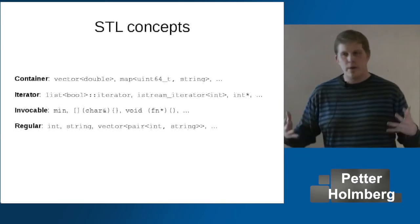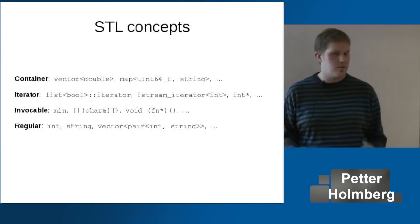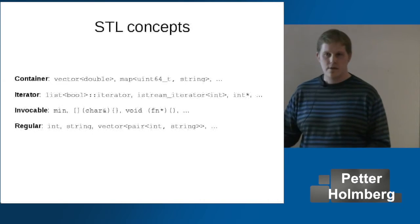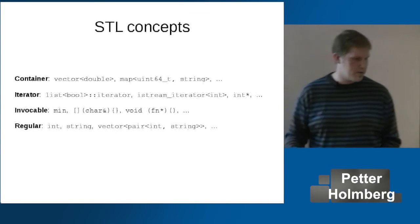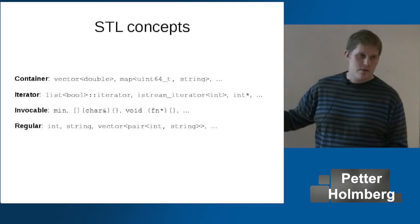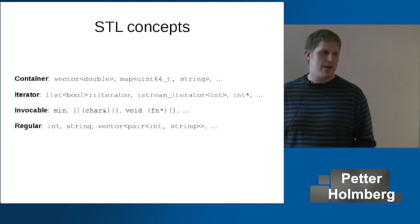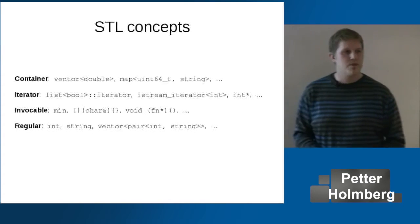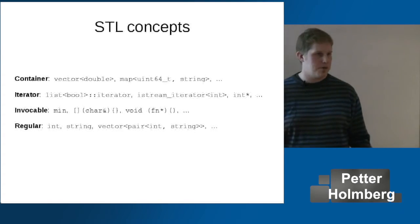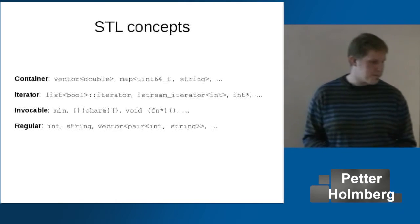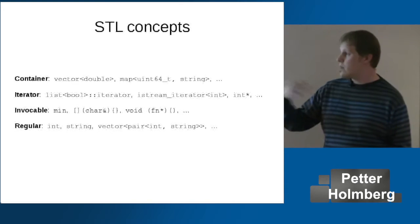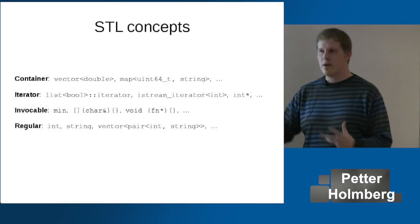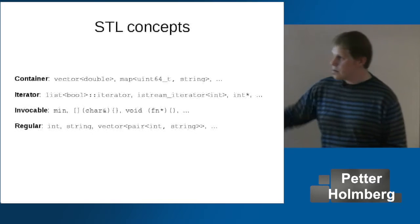All containers have a size member function that gives you the number of elements in constant time. You can get iterators out of them. That's what makes them containers. Of course, iterators are also concepts, basically based on the semantics of pointers from C. And many of the standard algorithms also take some kind of invokable type as an argument — this could be a function object, a lambda, or even a function pointer. So these are types where you can invoke the object like a function.